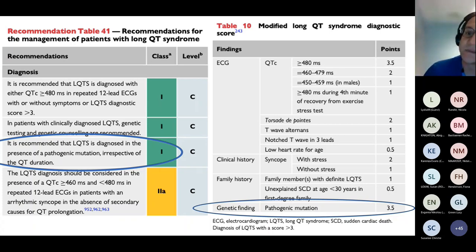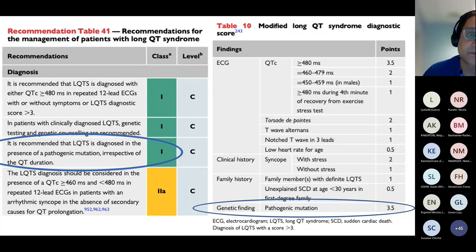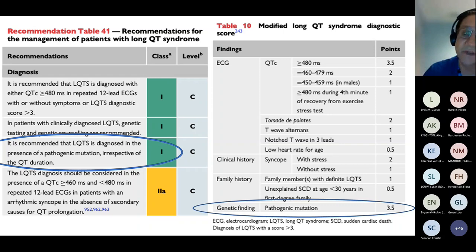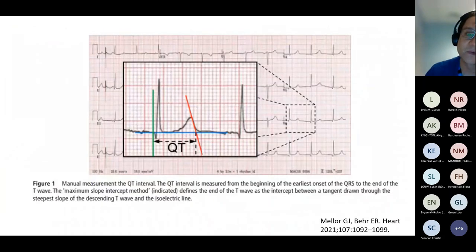That is typically the persistence of QT prolongation in the absence of QT-prolonging medication, and then you can consider family history. Genetics is clearly key in Long QT. With a pathogenic mutation often picked up in family screening when a proband's phenotype is secure, if you have a pathogenic mutation, then by definition you have Long QT syndrome. That's important, and I'll point out why afterwards.